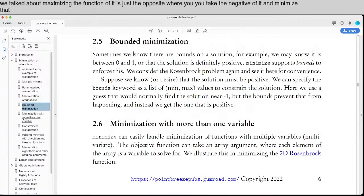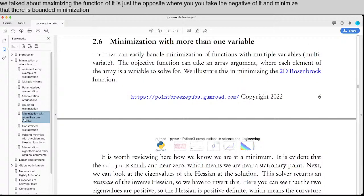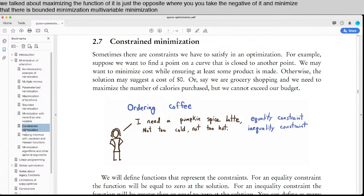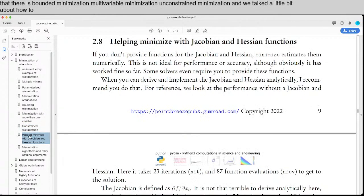There's bounded minimization, multi-variable minimization, constrained minimization, and we talk a little bit about how to use Jacobians and Hessians to speed up and make the minimization more stable.